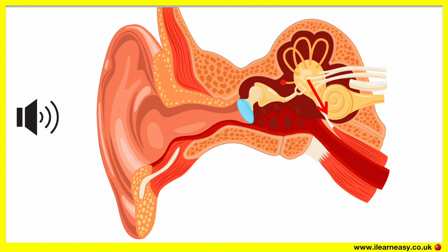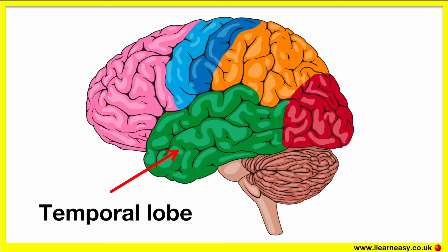There are many hairs in the cochlea. As the liquid moves, the hairs also move, which creates nerve signals that are sent through the auditory nerve into the brain. The brain then processes the signal as sound. And this is how we hear.